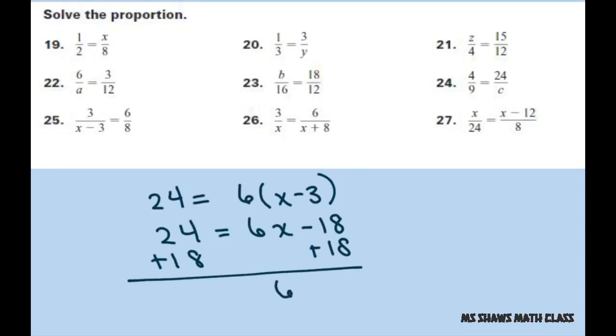So that gives you 6x equals 42. Divide both sides by 6. So x is 7.